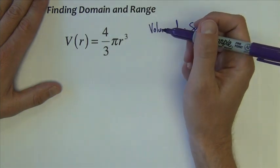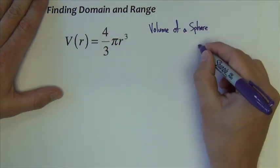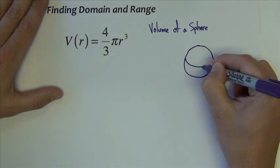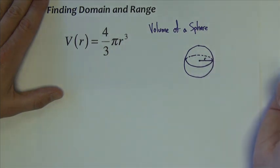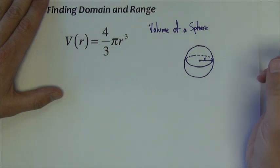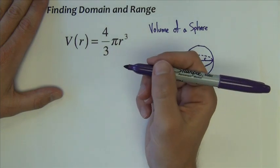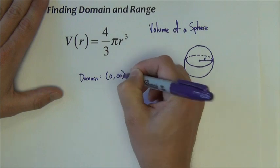Yet that still doesn't mean that r can be everything. If we're talking about volume of a sphere, we have a sphere, and a sphere has a radius. The radius can't take on every value. In fact, the radius could only take on positive values. The radius couldn't be zero, if the radius was zero we'd have no sphere, and it wouldn't make any sense to have a negative radius. So sometimes domain can be restricted by the context of the problem.